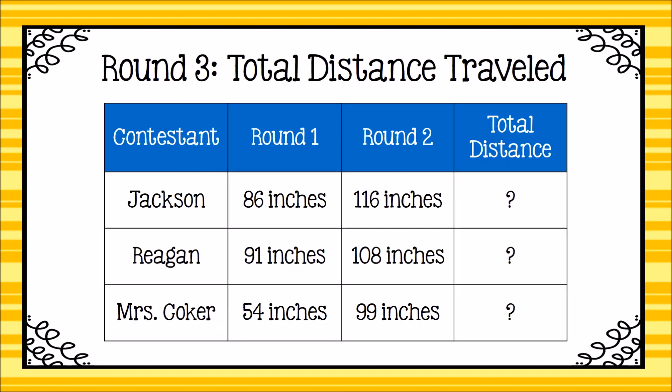For round three, we look at the total distance traveled between rounds one and two to determine the grand prize winner of the entire contest. Pause the video to determine if Jackson's planes traveled the greatest total distance, Reagan's planes, or Miss Coker's planes. When you have the answer, press play. Based on these total distances, Jackson is our overall winner in first place, Reagan in second, and Miss Coker came in third.